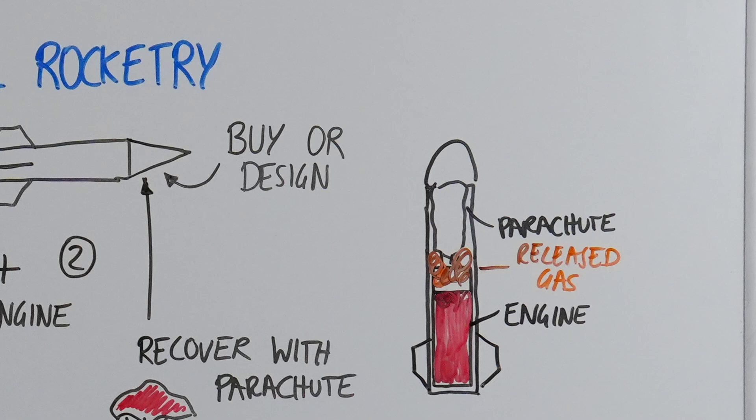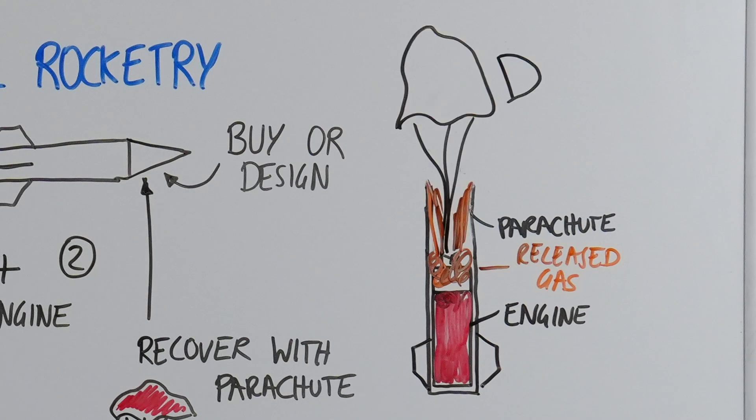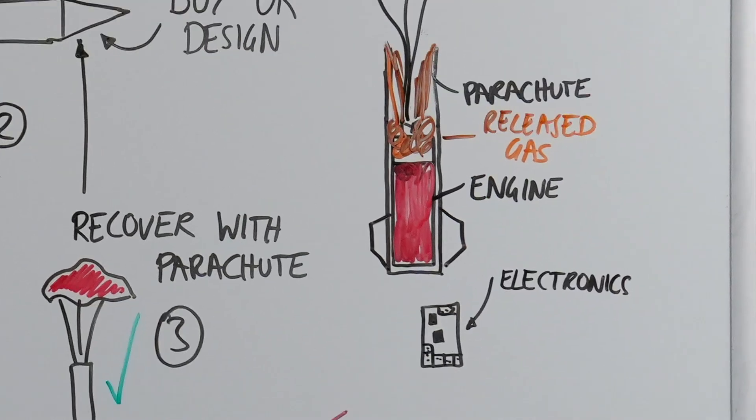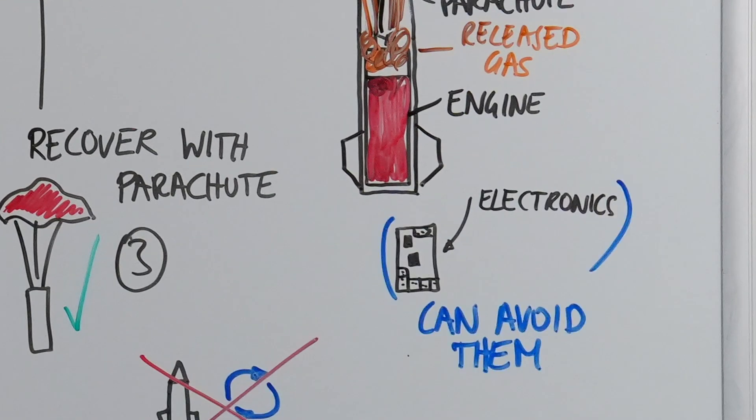This gas creates pressure inside the parachute compartment, causing the nose cone to open and the parachute to deploy. By utilizing the engine's recoil, we can avoid adding electronics to the model rocket.